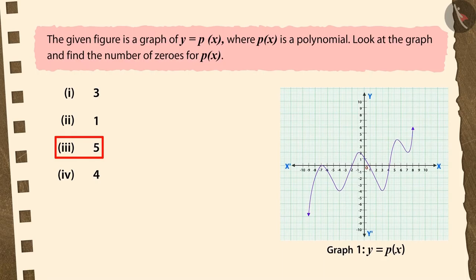If you have chosen the third option, that too is not correct. Along with the points of intersection on the x-axis, you have also counted the point of intersection on the y-axis. Recall that the number of zeros of a polynomial is equal to the number of points intersecting the x-axis of the graph of that polynomial.